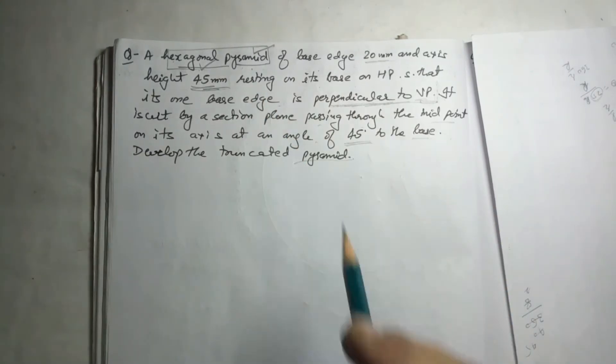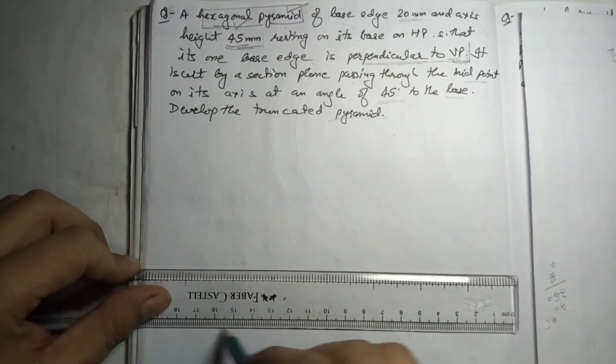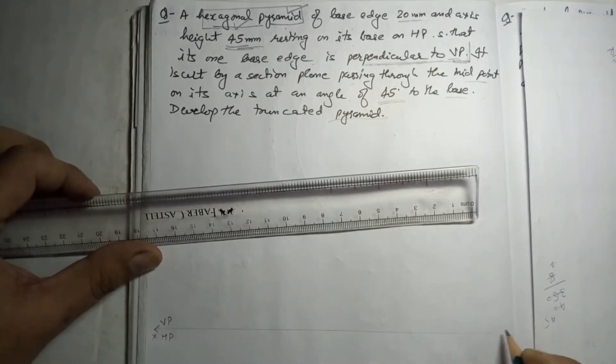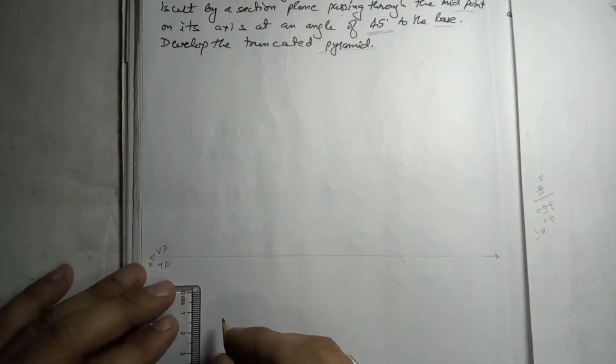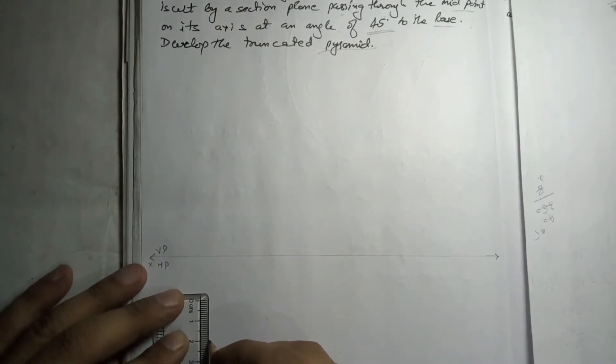First we will solve the question similar to the normal hexagon. One base edge is perpendicular to XY, and the base edge is 20 mm, so I'll directly take one base edge perpendicular to XY as 20. Now I will complete the hexagon — the internal angle formula is 180 minus 360 divided by n.